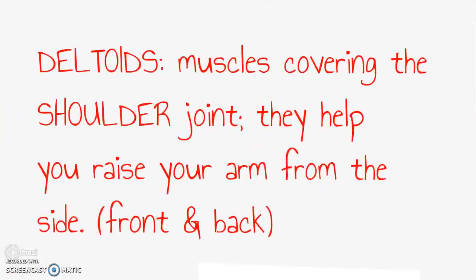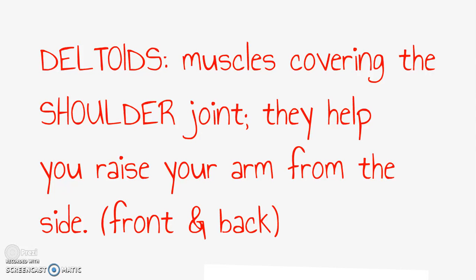The next muscle group is the deltoids. These are muscles covering the shoulder joint. The deltoids help you raise your arm from the side. And they can be seen from the front and the back view. So for number two you would write deltoids, shoulders, yes, and yes.